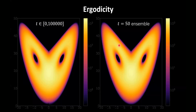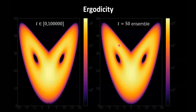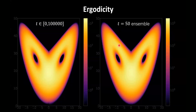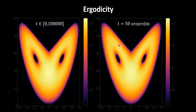So if ergodicity is true, then if you perturb the initial condition by any amount — not just a small amount — the statistics would not be changed at all. That's one of the arguments for the butterfly effect not being able to affect the climate.